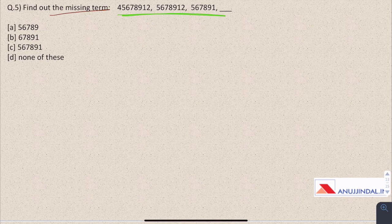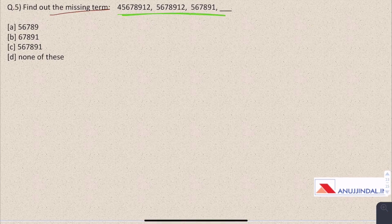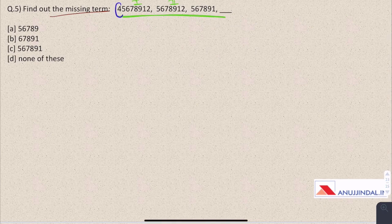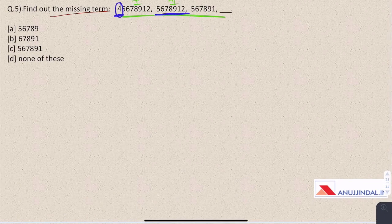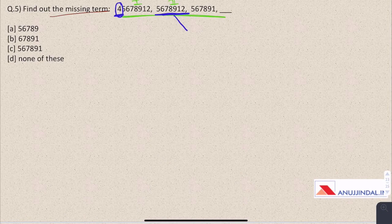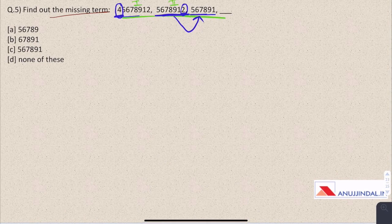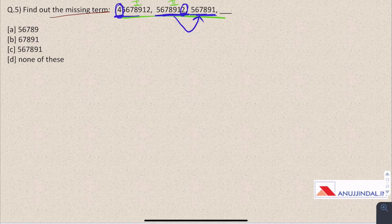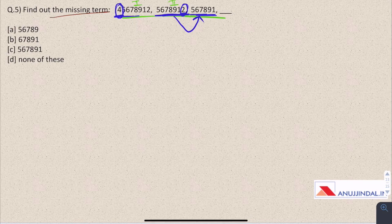If we observe closely we realize that from the first term to get the second term we remove the digit 4, and we get the second term. From the second term to reach the third term we remove one digit from the right. But the first time we have removed one digit from the left, then we remove one digit from right. And this is the third number. We have to alternately remove one digit from left and right each to get the next number in the series.